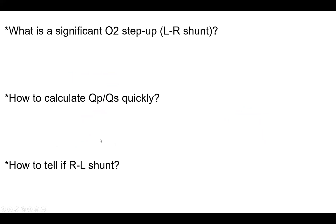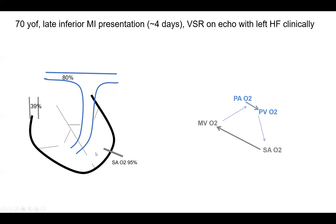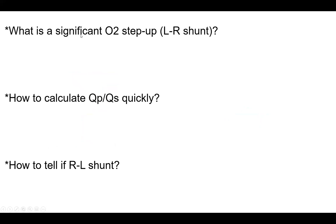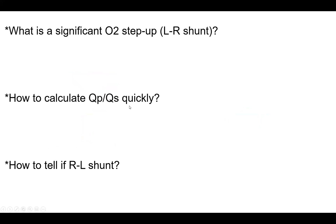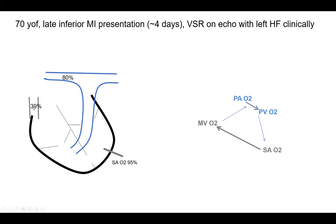Those are the three basic questions you ask yourself every time you assess for shunts. Number one: is there a significant step up? To screen for shunt, you look at the SVC sat and the PA sat. A significant step up is 8% or more. Here you have way more than 8% — you have 41% — but we consider significant to be 8% or more.